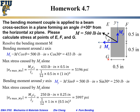To solve this, we resolve the bending moment into two components. The bending moment around the z-axis is: Mz = M·cos θ = 500 × cos 30° = 433 lb·in. The bending moment around the y-axis is: My = M·sin θ = 500 × sin 30° = 250 lb·in.